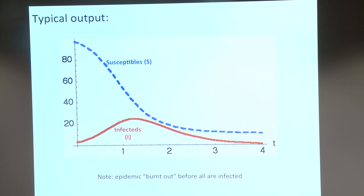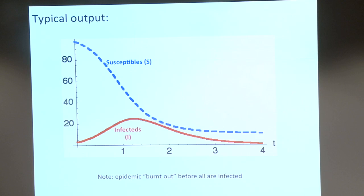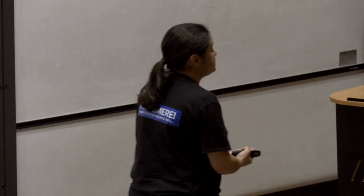This model is pretty much exactly 100 years old, first written down and analyzed. It's really simple but gives a lot of insights. Typical output: the blue dotted line is susceptibles — it starts high and goes down. The red curve is infected — it increases, peaks, then decreases. You get insights quickly: if you look at the S curve, it doesn't go to zero — it asymptotes to some value other than zero. This is one of the first things you learn: epidemics end before they've got everyone. There's nothing special about those people who escaped — they're just lucky — and there will always be a few.